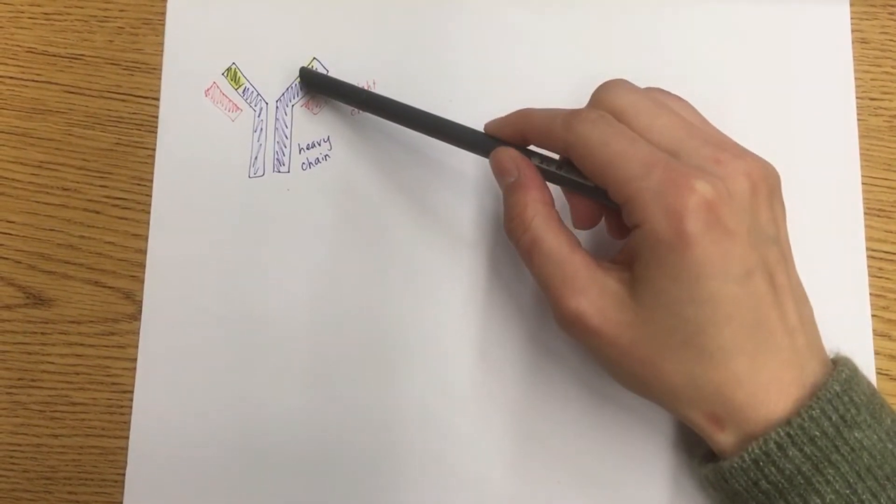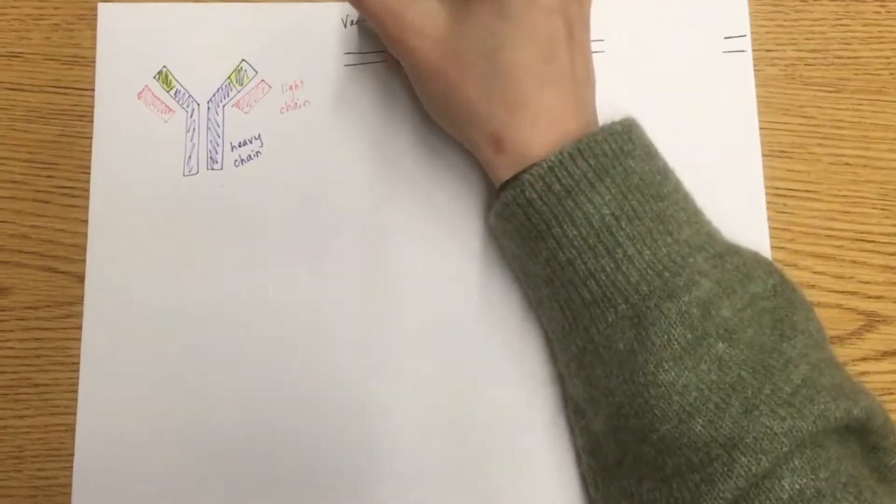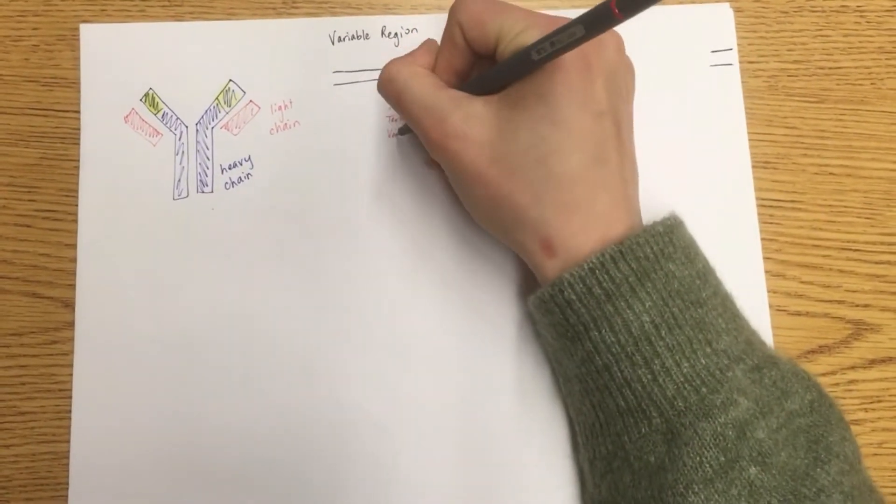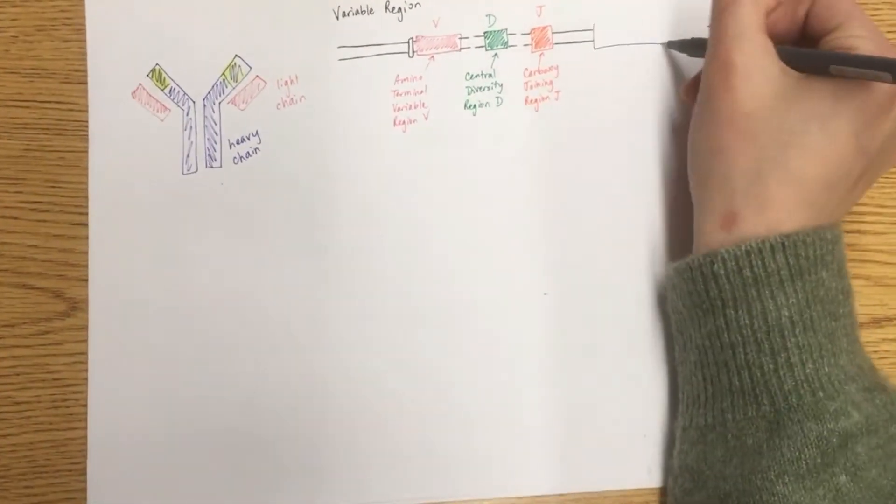The variable domain is divided into three distinct subdomains: the amino terminal variable region V, the central diversity region D, and the carboxy joining region J.